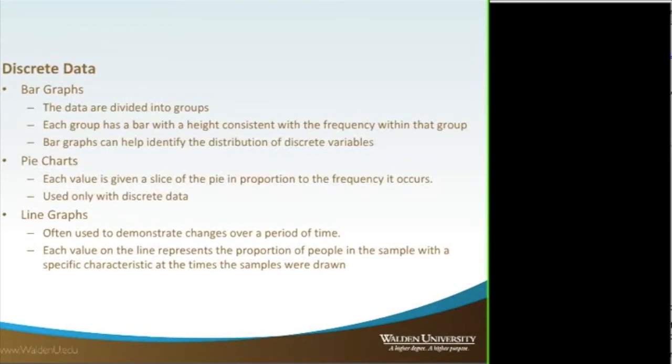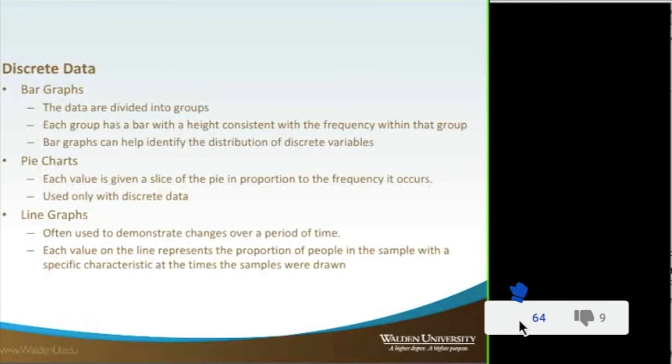Bar graphs are divided into groups. Each group has the height of the bar consistent with the frequency of that group. Same with pie charts. They're similar, except it's going around a circle, looking at the proportion. And then line graphs are typically used if you're looking at data over time.